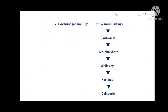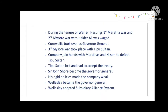Let me show you the chronological order of the Governor Generals of India. The first Governor General was Warren Hastings, as we have just studied. After him came Cornwallis, then Sir John Shore became the Governor General, then Wellesley, after him Hastings, and the next one was Dalhousie.